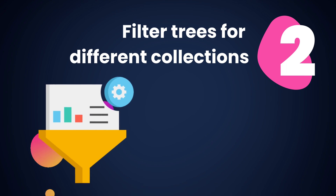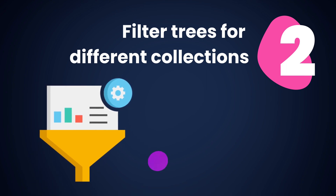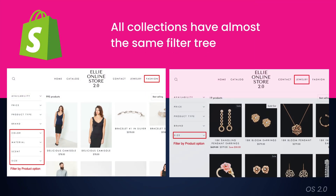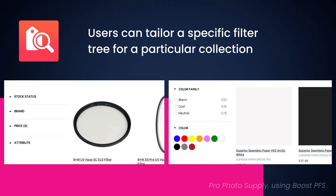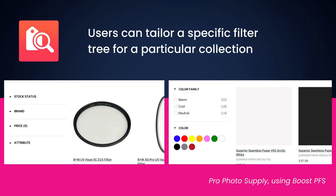Now let's see the filter trees for different collections. Different collections using Shopify OS 2.0 product filtering have almost the same filter options, except for the filter by product options. But with the Boost app, you can tailor a specific filter tree and assign it to a particular collection.